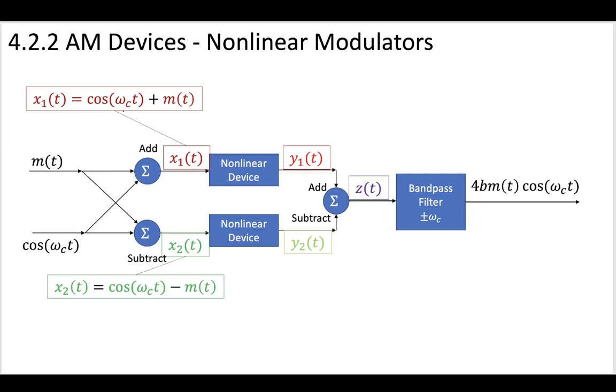x1 is when we add our cosine to the message. x2 takes this cosine and puts it through a subtractor where we subtract the message.